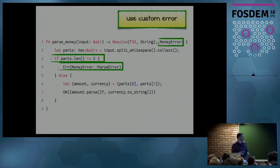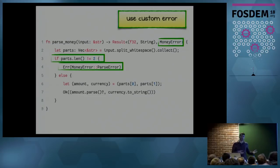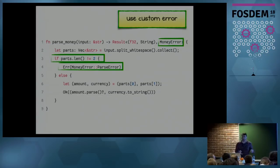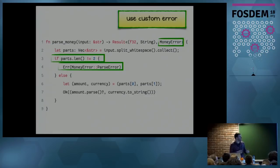We can handle it explicitly: if the length of our vector is not two, we don't have both an amount and a currency, so we return an error. Notice I don't write `return` anymore — in Rust, return is implicit. Everything is an expression, and the last statement's result is returned to the caller. In this case, line four is a return, and line seven is also a return. We also introduce a new custom type: `MoneyError`, with a variant called `ParseError`.